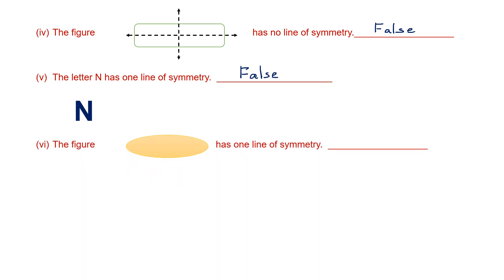Question 6: the figure shown here has one line of symmetry, is what the statement says. We have a vertical line of symmetry and also a horizontal line of symmetry. So this statement, which says the figure has only one line of symmetry, is false.